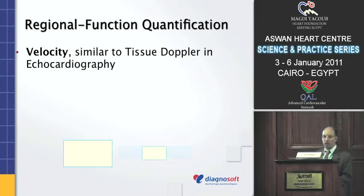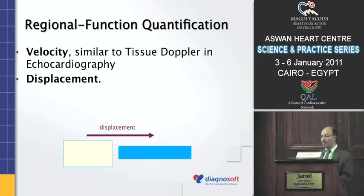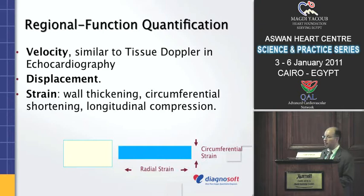There is more than one way to look at regional function. You can look at how fast it's moving — that's what's done in echo with Doppler, measuring velocity. The other is how far the wall moves — whether there is wall motion or not. However, these two indicators are not that specific regionally, because sometimes a tissue could be moving fast without contracting, simply being tethered to another normal tissue. The more specific one is strain, because strain indicates the changes that happen to the shape. As the wall thickens, you expect radial strain — elongation — and reduction in circumference, which is circumferential strain. We measure three kinds of strains in the heart.